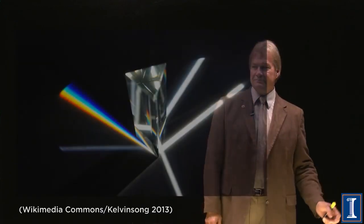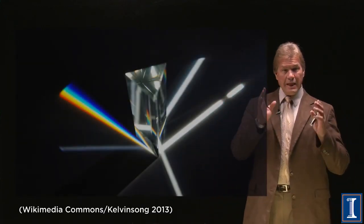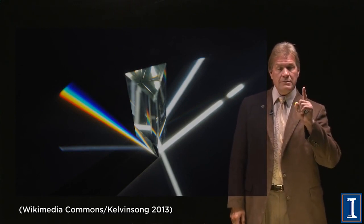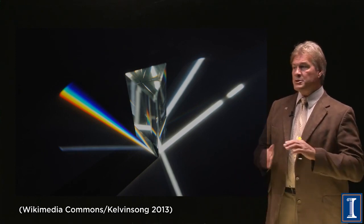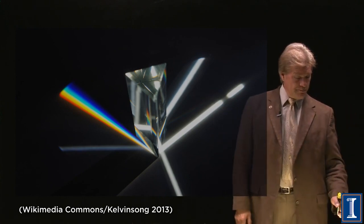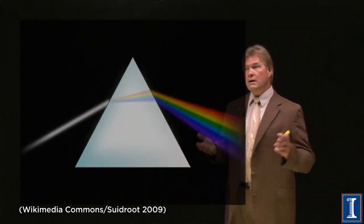A very basic one that every young child asks is: why is the sky blue? I'm going to tell you. Here's the basic deal. Light — the light coming from our sun — is not one single color. It's not one single wavelength. It actually has a whole spectrum. And if you use something like a prism, you can break up the light into its colors.